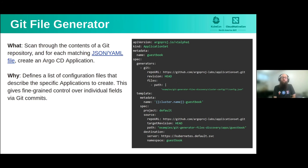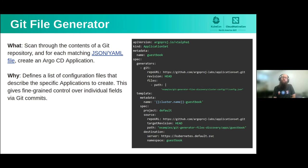The third Git-based generator is the Git file generator. This allows you to define JSON or YAML files within a Git repository and have them automatically processed, parsed, and inserted into the application template by the Application Set. This allows more fine-grained control over individual fields of the template compared to other generators.